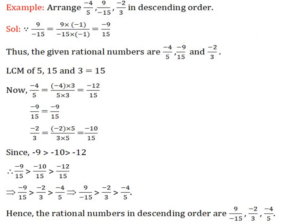Arrange minus 4 by 5, 9 by minus 15, and minus 2 by 3 in descending order. To solve this, first make the denominators positive, then use the comparison method for rational numbers. Solution: 9 by minus 15 equals minus 9 by 15. Thus the given rational numbers are minus 4 by 5, minus 9 by 15, and minus 2 by 3. The LCM of 5, 15, and 3 equals 15.